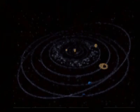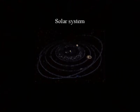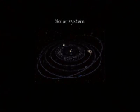Other planets in our solar system, in particular Jupiter and Saturn, also have magnetospheres.